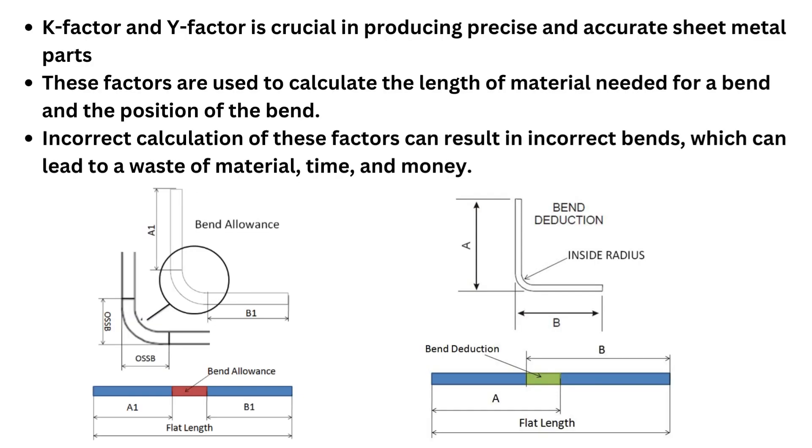K-factor, Y-factor, bend allowance, and bend deductions are very important for producing precise and accurate sheet metal parts. These factors calculate the length of material required for the bend and the position of the bend. Incorrect calculation of these factors—K-factor, Y-factor, bend allowance, or bend deduction—can result in the waste of material, time, and money. We need to calculate these factors correctly.